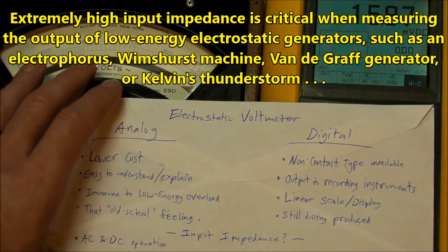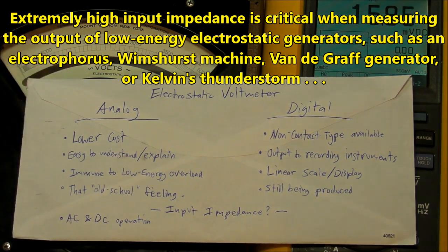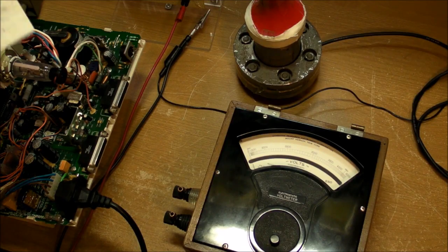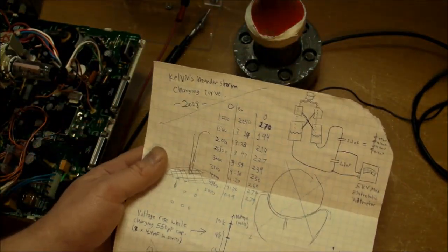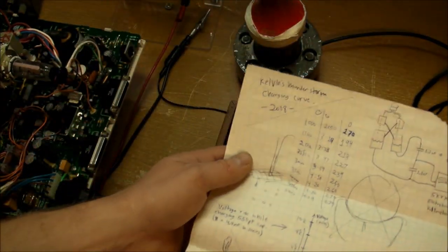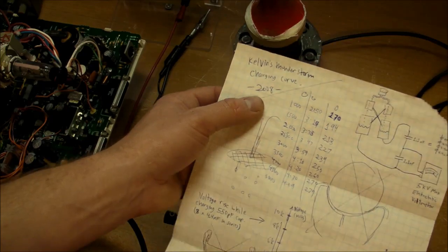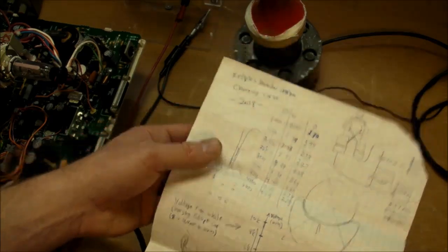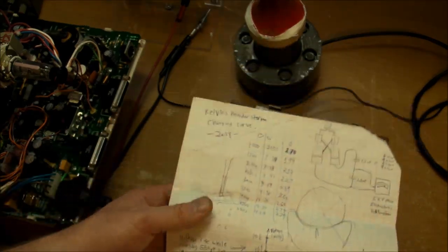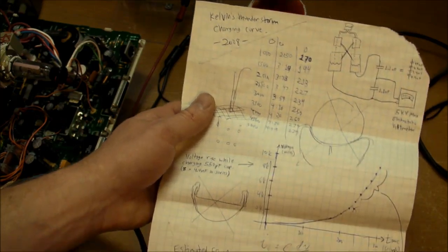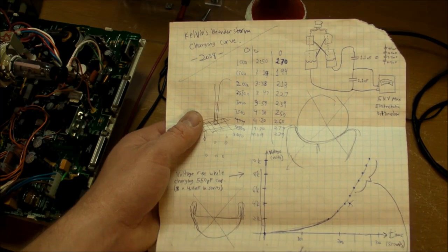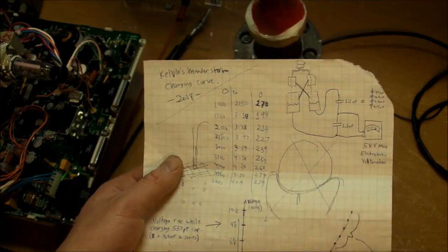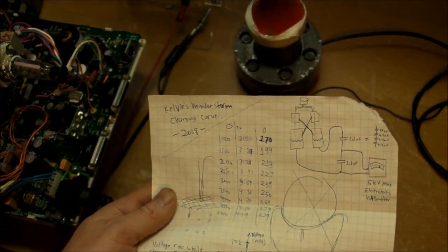Of course this thing is going to have extremely high input impedance in the teraohm or petaohm range. I think peta comes after tera. But with this thing right here or any kind of digital electrostatic voltmeter, at least with the contact type you can have something like a teraohm or something like that.